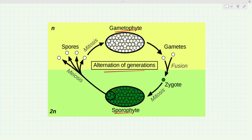A diploid structure becomes haploid by meiosis. The gametophyte forms gametes — both gametophyte and gametes are haploid structures, so gametophyte forms gametes by mitosis. There are two types of gametes: male gametes and female gametes. After fusion, they form a zygote, which is a diploid structure.